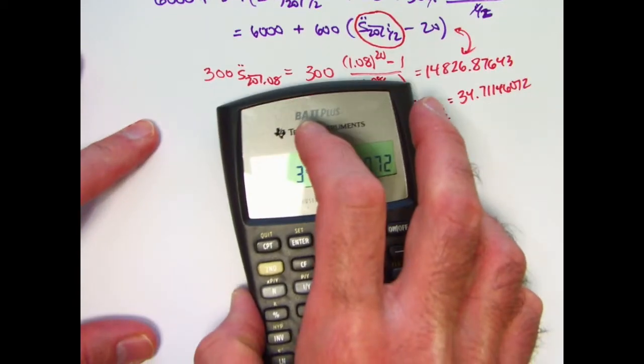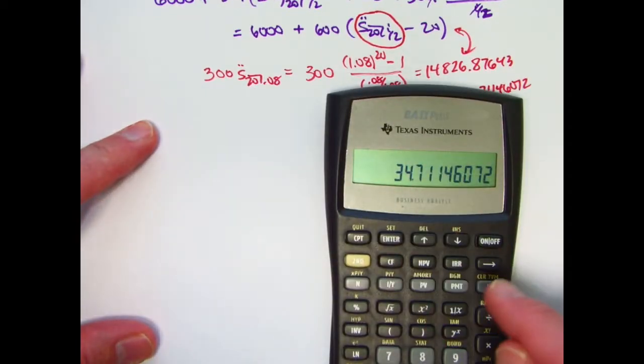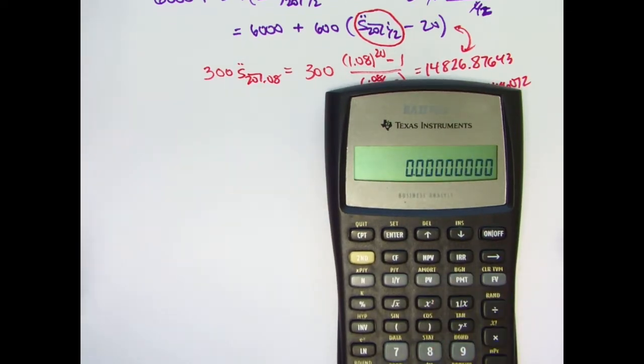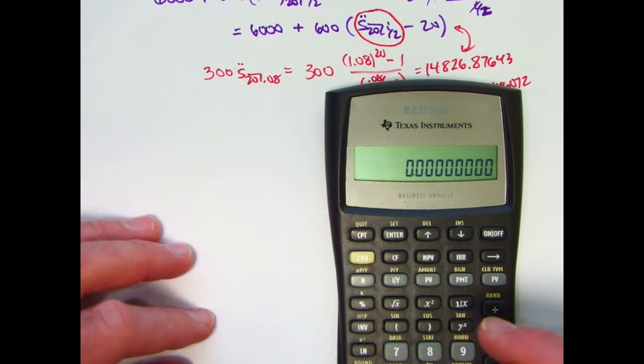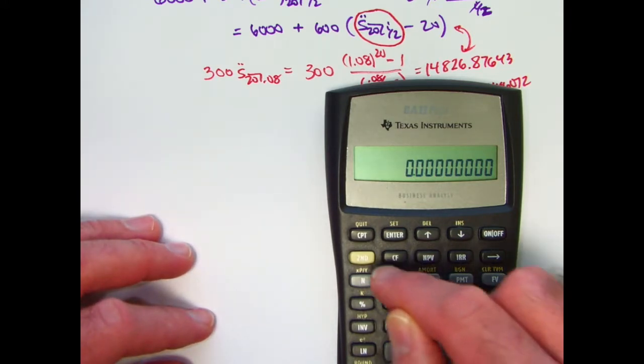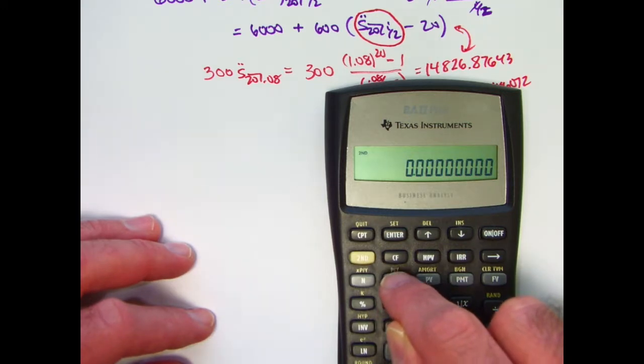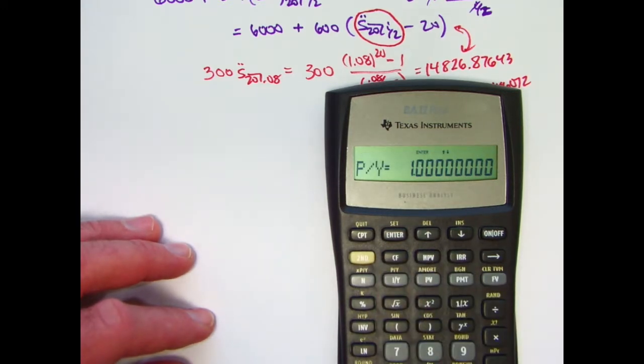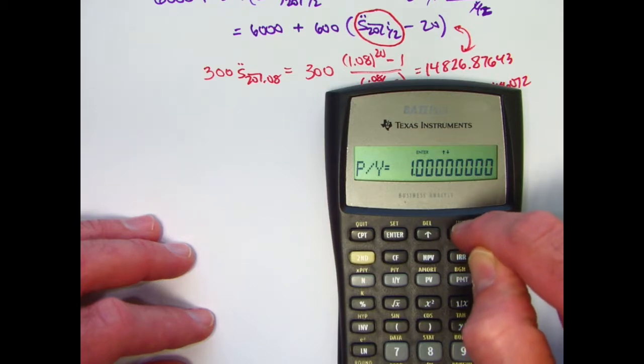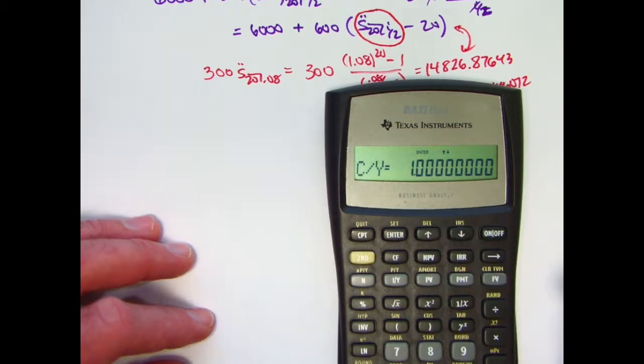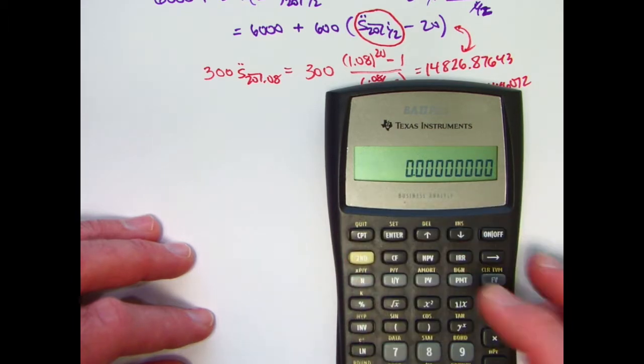So how do you do that? Now we're going to use the financial functions. Again, I showed this to you in video number 42. The first thing I typically do is make sure my payments per year and compounding periods per year are set to 1. We can make sure that that's the case by doing second and then this button, c p slash y there. One payment per year and one compounding period per year. Let me arrow down to see that. Yep, that looks good.